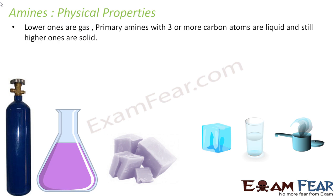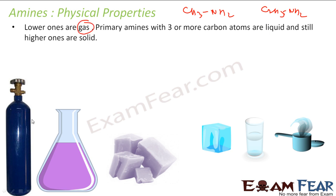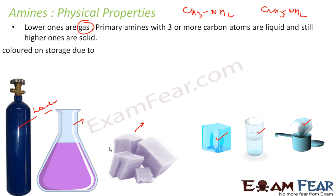If you see, the lower amines — for example, CH3NH2 and C2H5NH2 — methanamine, ethanamine — these are gases. The lower ones are gases. Three carbons or more, they are either liquids, or the higher ones are solids. So we have amines in the gas state, liquid state, and solid state — all three states. Below three — one or two carbons, methanamine, ethanamine — these are all gases, and then we have liquid amines and solid amines too.